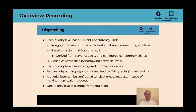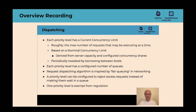The algorithm takes requests from queues and chooses which queues to dispatch from for further processing. A priority level can be configured to not queue and instead just reject excess requests, like the max-in-flight filter did. There are also limits on queuing: each priority level has a limit on queue length and a limit on the time a request can spend waiting in a queue. A request can be rejected due to either of those limits. Finally, there is one priority level that is exempt from regulation.